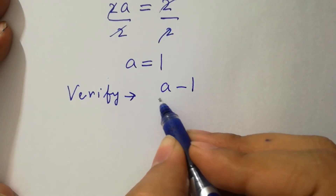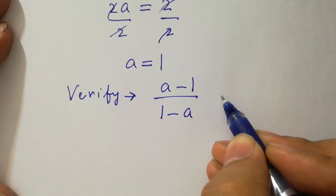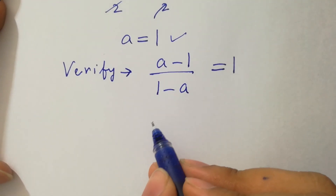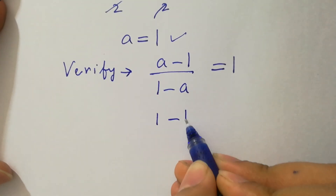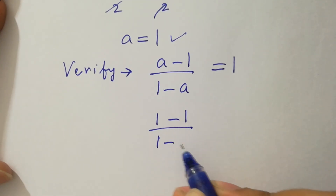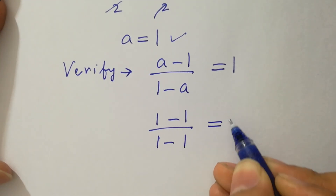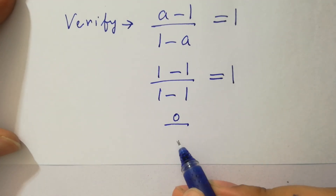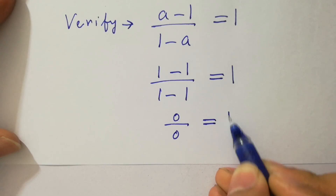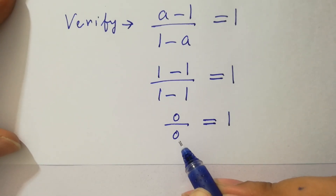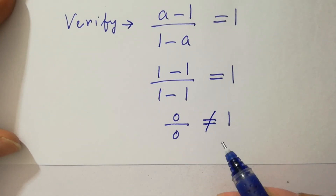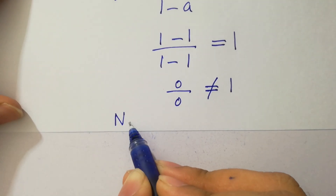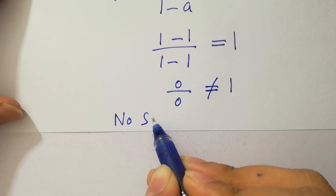Let's verify: (a minus 1) over (1 minus a) equals 1. Put the value of a which is 1 — we have (1 minus 1) over (1 minus 1) equals 1, which is 0 over 0, an undefined form. This does not equal 1, so this problem has no solution.